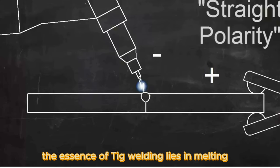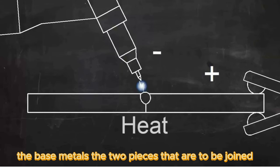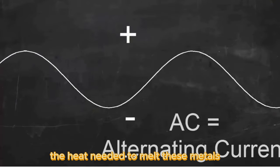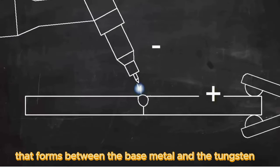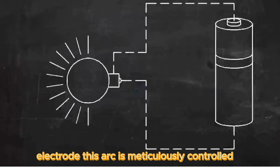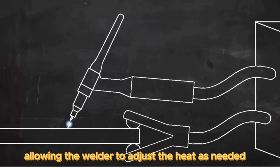The essence of TIG welding lies in melting the base metals, the two pieces that are to be joined. The heat needed to melt these metals is generated by an electric arc that forms between the base metal and the tungsten electrode. This arc is meticulously controlled either through a foot pedal or a thumb wheel on the torch, allowing the welder to adjust the heat as needed.